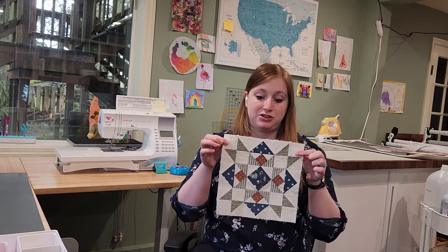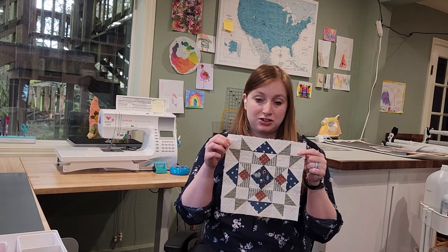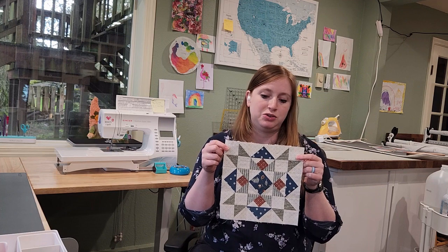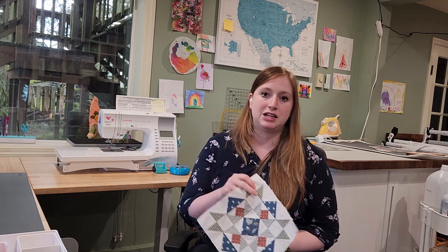This is block number 16 called the Christmas Star and here's the block I made. I'm going to give you some alternate cutting instructions so that you can do some four at a time flying geese in this block if you'd like and some eight at a time half square triangles.